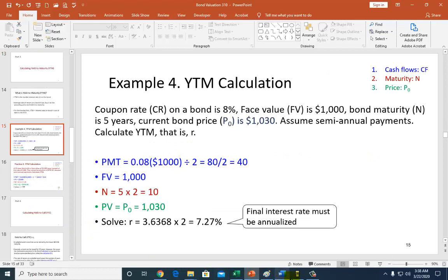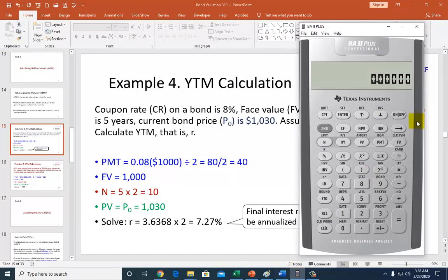So, using our BA2+, let's pull it up. We clear this up. So, second clear TVM, second clear work. And then put in the blue, which are the cash flows of 40 is payment, and 1,000 is the face value that you'll get at maturity. And then the red is the investment period, which is 10, is N. And then the green here is the price. So, 1030, that is. And put this plus minus thing so you can have a negative in front and then enter it as PV. That way, what you're calculating will come out right. The equation has to stay balanced, because price is on the left side of the equation and everything else is on the right side.